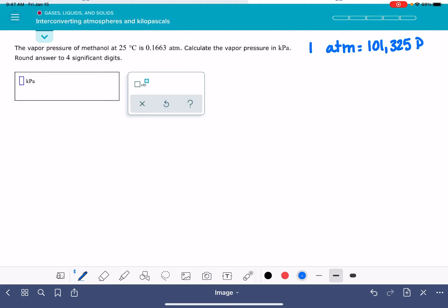One atmosphere is equal to 101,325 pascals. One atmosphere is equal to 760 torr.